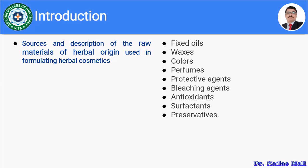There are many herbal materials available, starting from oils to certain herbs, which are going to be used in manufacturing cosmetic preparations. The ingredients include fixed oils, waxes, colors, perfumes, protective agents, bleaching agents, antioxidants, surfactants, and preservatives. Not in all cases do we use herbal materials — there are few cases where we have to rely on synthetic materials.